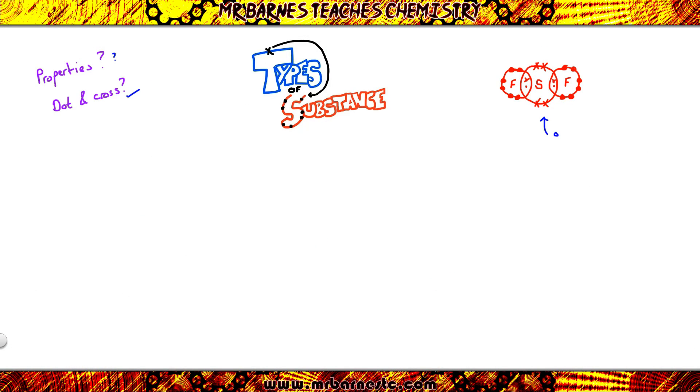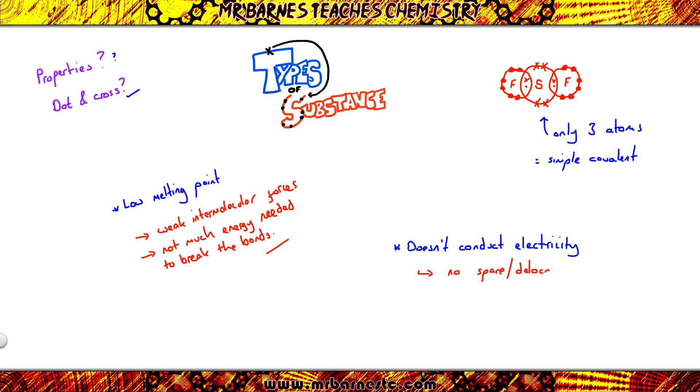Now when it gets onto the properties, we can see I've only got three atoms, one sulfur and two fluorines, therefore it's simple covalent. If it's simple covalent, it has a low melting point and it doesn't conduct electricity at all. The reason it has a low melting point? Weak intermolecular forces. Not much energy is needed to break the bonds. Why doesn't it conduct electricity? There are no delocalized electrons, no electrons free to move, therefore it can't carry or pass on a charge.